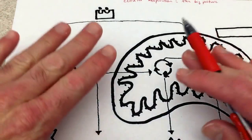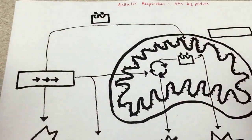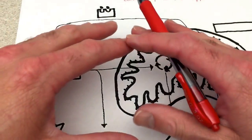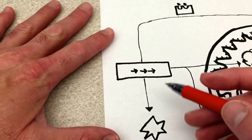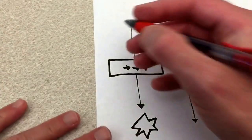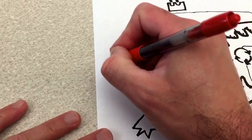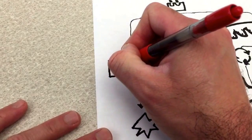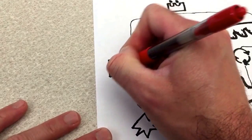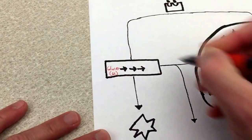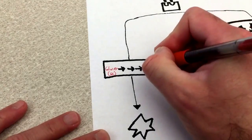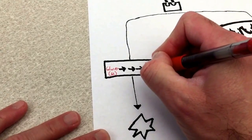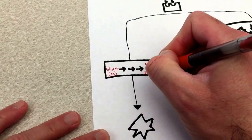We've seen these three processes. Let's take a big step back and look at this process as a whole. The very first process we know is glycolysis, where we take glucose, a six-carbon molecule, and we break that down into two molecules of three-carbon pyruvate.